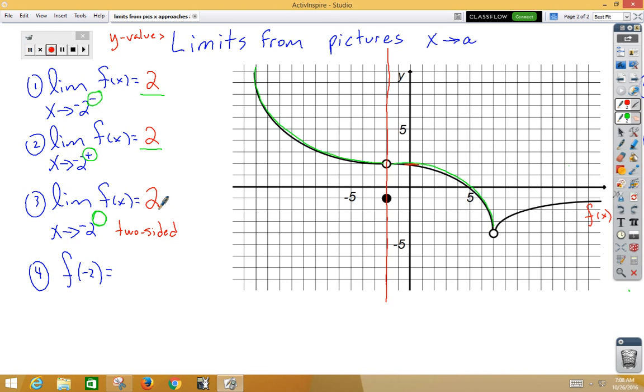Finally, question number 4, f of negative 2 is really an algebra 1 question. We're looking for the y value when x is negative 2. We're thinking like an ordered pair, and we're looking for a closed circle. Notice, up here we have an open circle, but down here we have a closed circle. That's the one we're looking for. So f of negative 2 would be negative 1.